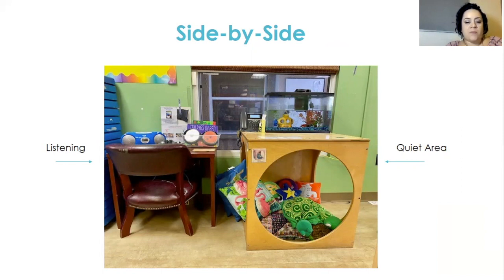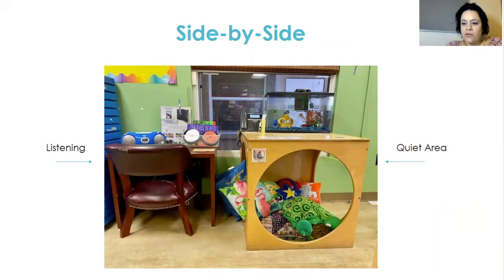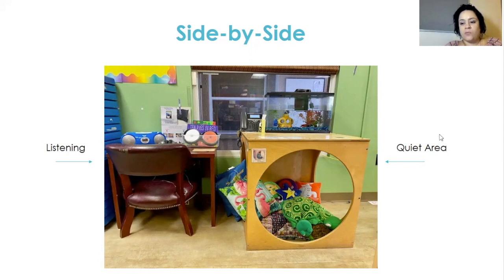We're thinking about combining our loud and active centers, and we're thinking about combining our quiet centers. When considering other centers in your room, think about the concepts that are able to cross over. Think about your math and science area — you're observing, measuring, weighing. Those are concepts that go together, so you can put those centers near each other. Think about your science and sensory area — you could probably combine those. Your writing and your literacy center can be combined or placed close by each other.